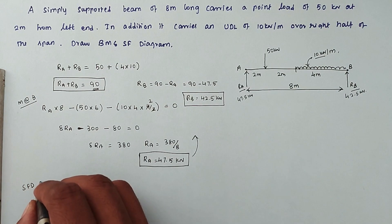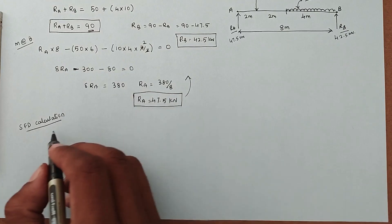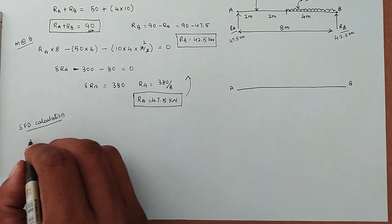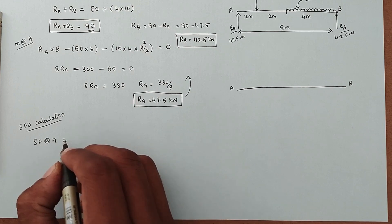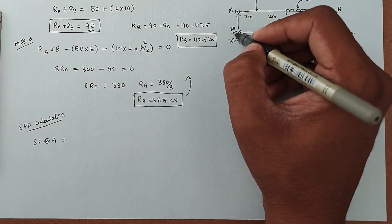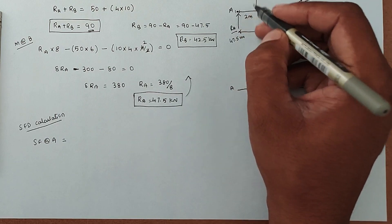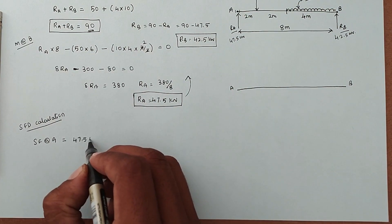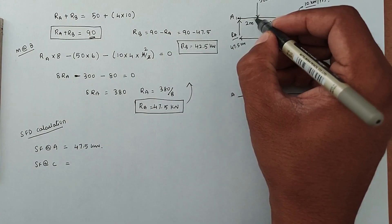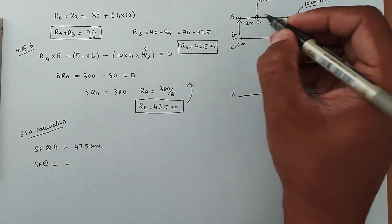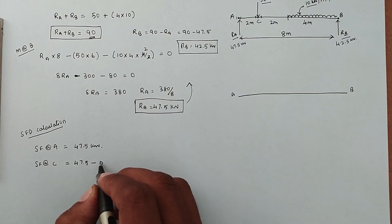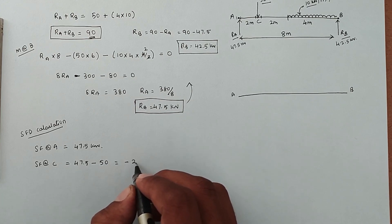Now we calculate the shear force diagram (SFD). Shear force at A: on the left side there are no forces, and on the right side we have RA acting upward. This is a clockwise (positive) force, so SF at A equals positive 47.5 kN. Shear force at C: we have 47.5 kN upward minus 50 kN downward (anticlockwise), giving SF at C equals minus 2.5 kN.